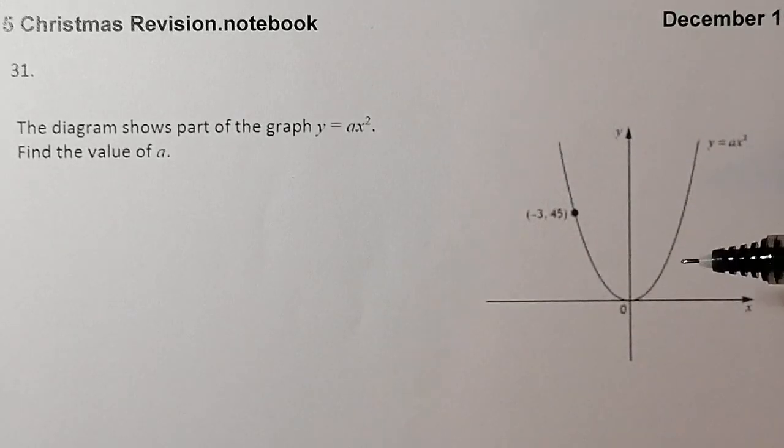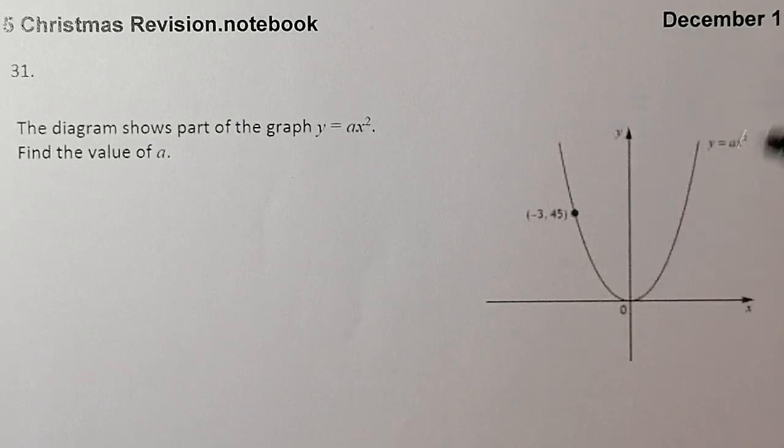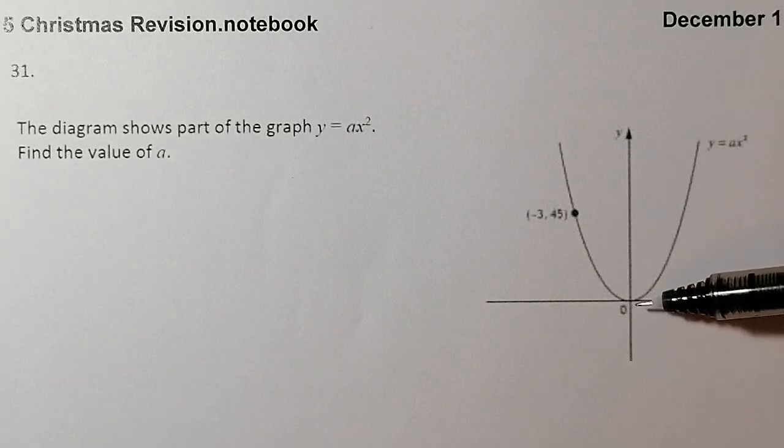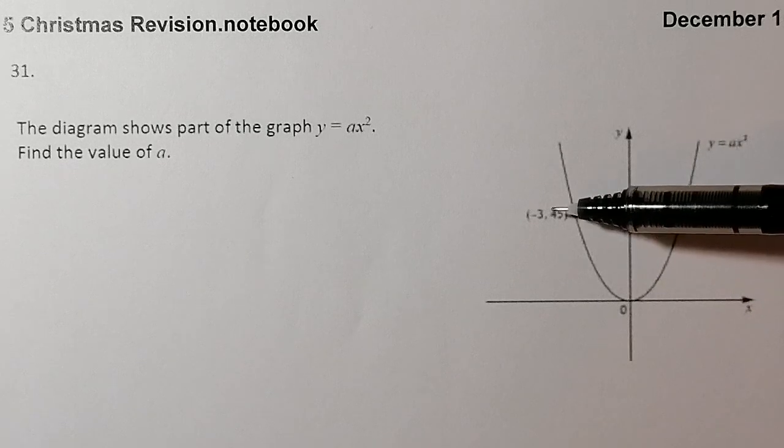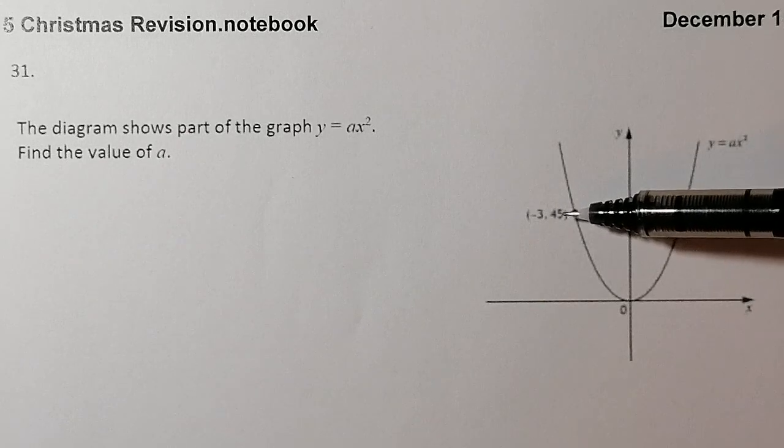So in this diagram here we're not given very much information, but we're given two points. We've been given the point (0, 0), so that's where the graph actually turns, and we've got the point (-3, 45).